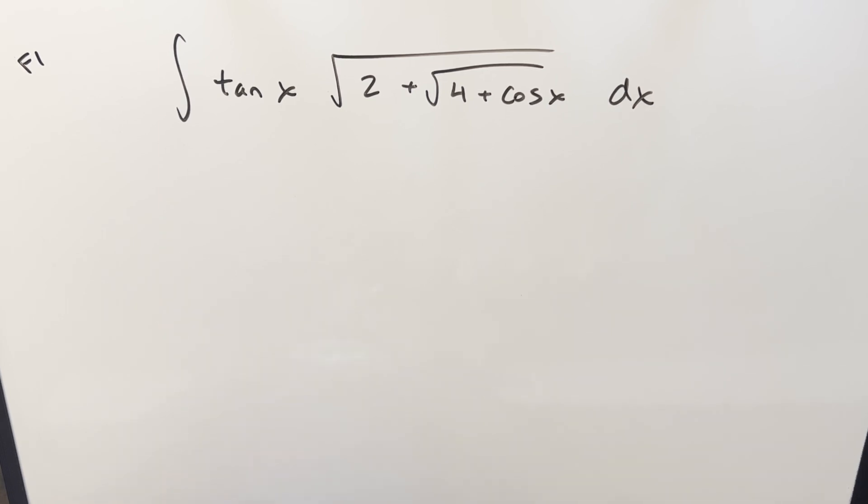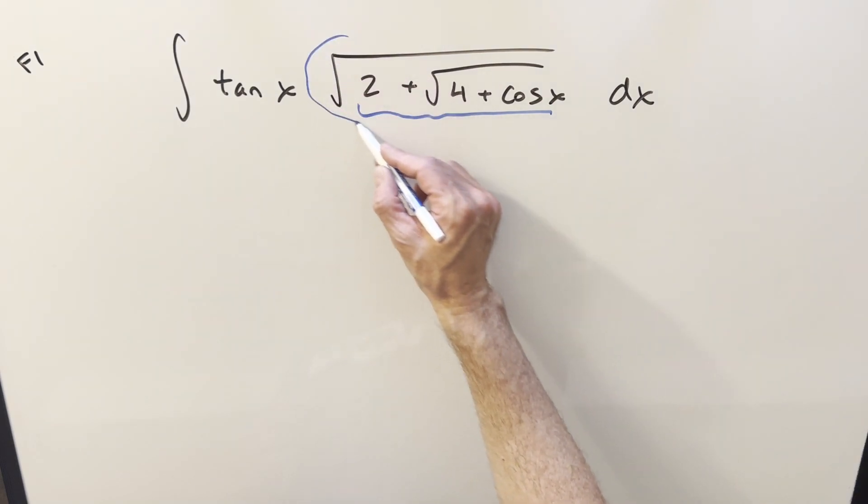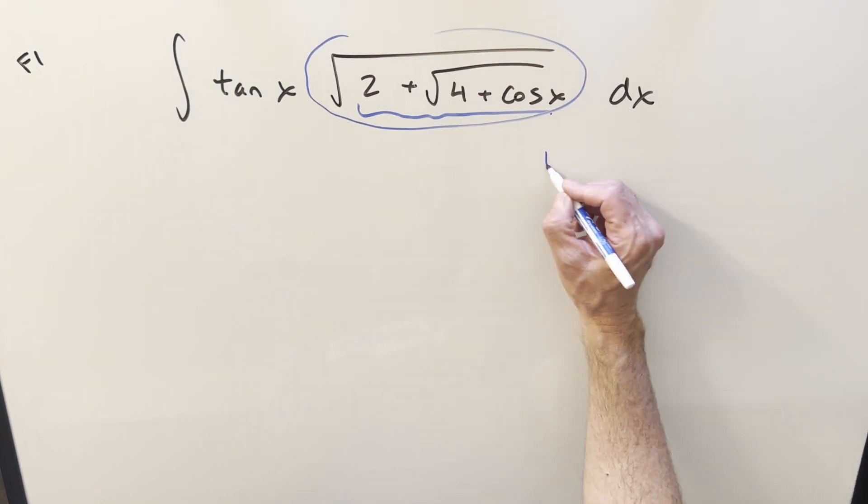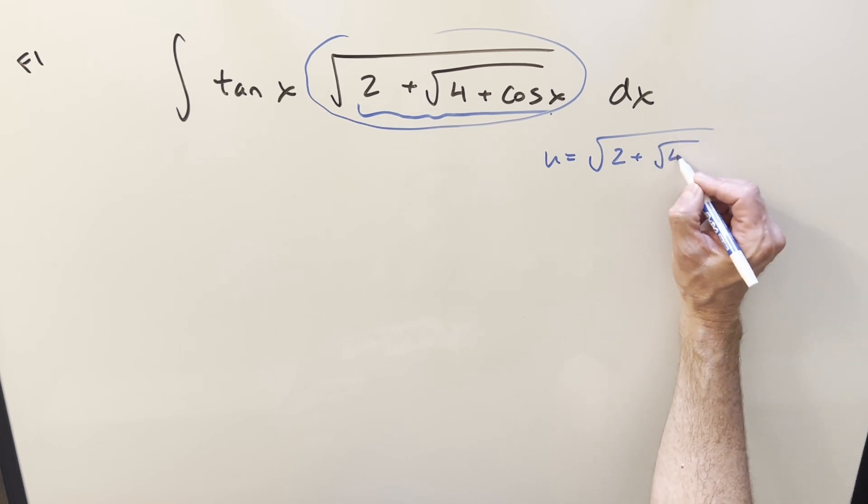First I didn't really know what to do with this one. I was hoping that somehow this would be a perfect square, but I couldn't get that to work. So what I tried instead was just a u substitution for this whole thing here. So we'll set u equal to square root 2 plus square root 4 plus cosine x.